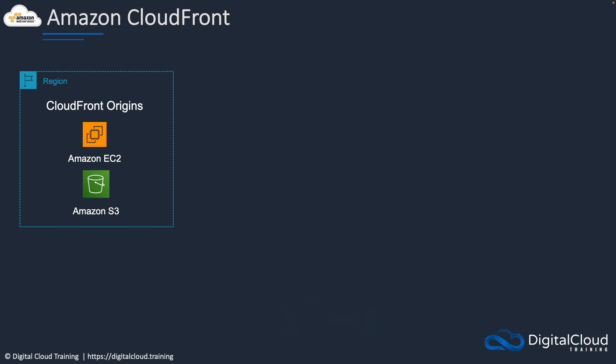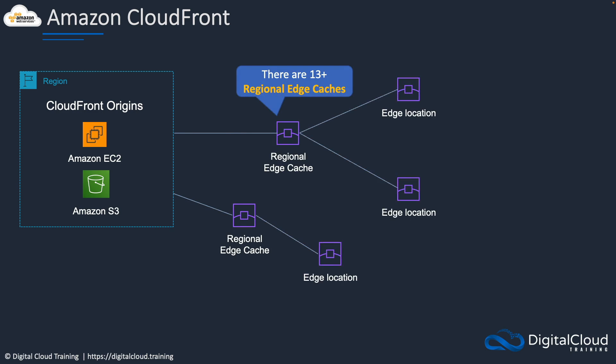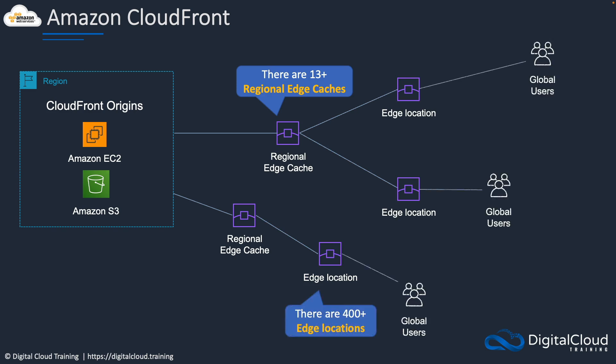Another important part of the AWS global infrastructure is regional edge caches and edge locations — these are part of the CloudFront network. CloudFront is a content delivery network service, a CDN, and we use these to get content closer to our end users for better performance. For example, we might cache video files or images in edge locations that are close to our users around the world, and there are many edge locations and regional edge caches, so latency is lower and users can download or watch videos without having to go a long distance around the world.